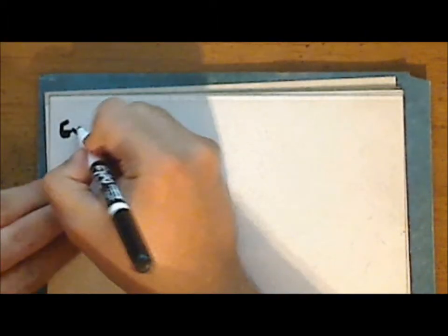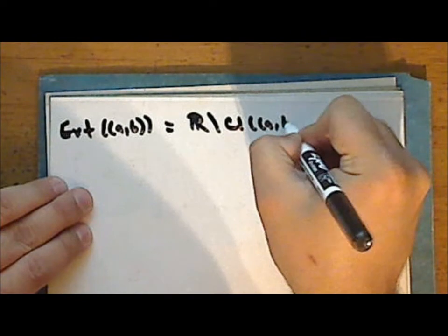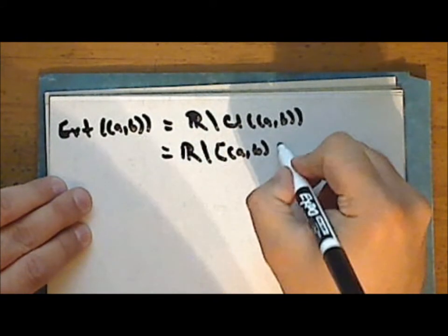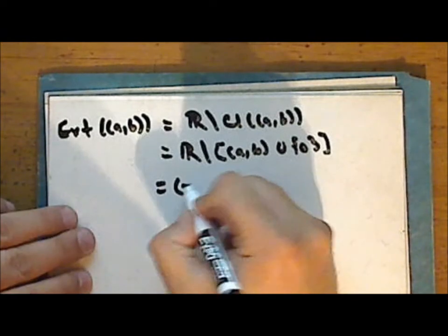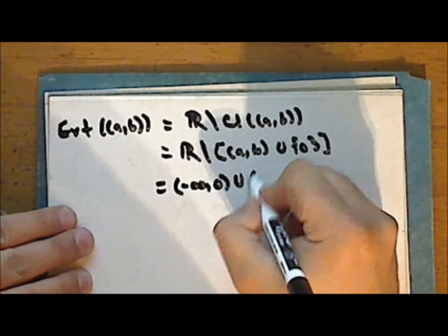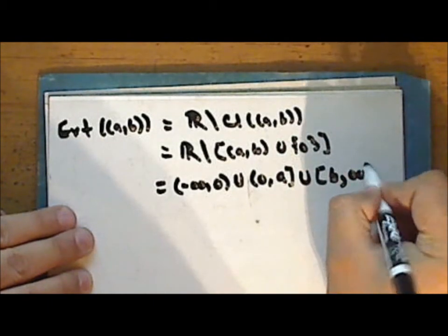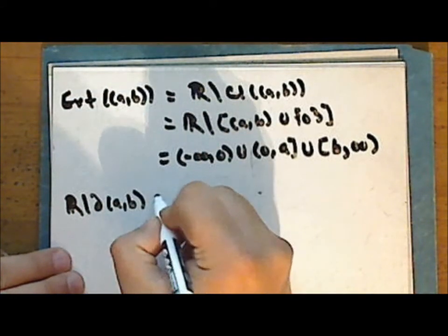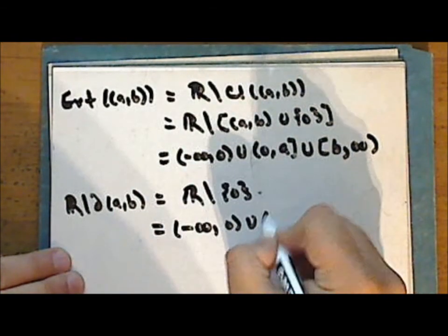The exterior of the set is the complement of the closure. So this is the complement of the union of the interval from a to b with the singleton set containing zero. Since a is strictly greater than zero, we have the union of all numbers less than zero with the numbers greater than zero and less than or equal to a, and all numbers greater than or equal to b. The complement of the boundary is the complement of the singleton set containing zero, which is again the deleted set of reals — all real numbers not equal to zero.